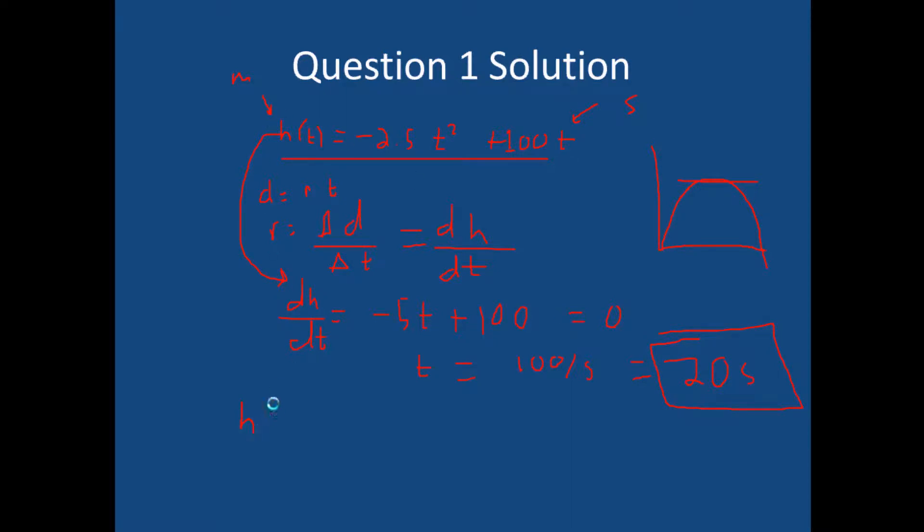Now in order to find its maximum height we just plug 20 seconds into here. h of 20 is equal to minus 2.5 times 20 squared is 400, plus 100 times 20 which is, let me just calculate this out quick, minus 2.5 times 400 plus 100 times 20 is a thousand meters. So it reaches 1000 meters, tada. And that is the solution to number one.